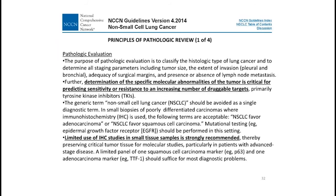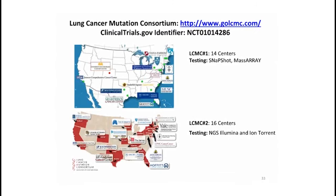The Lung Cancer Mutation Consortium started with 14 centers back in 2010-2011 and is now at 16 centers. We're actually wrapping up version 2 and moving on to version 3. At our institution, I'm incredibly grateful to Paul Bunn and the people who developed the Lung Cancer Mutation Consortium because it really allowed us to develop research-based tests that then became clinical-based tests.